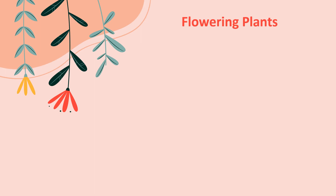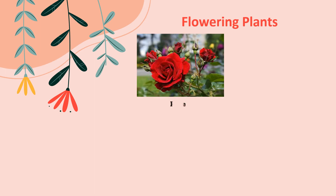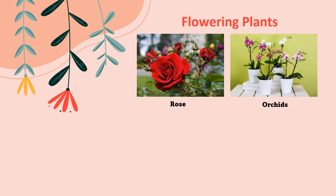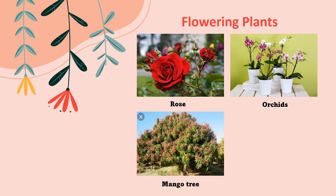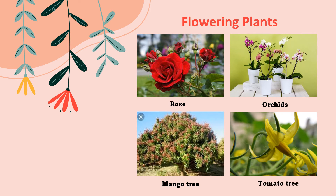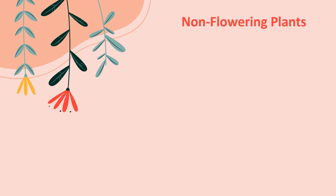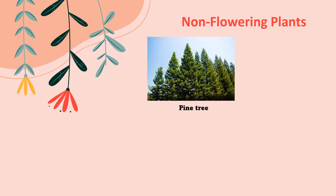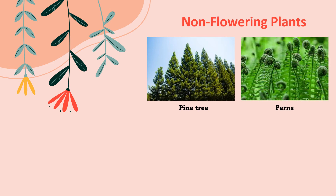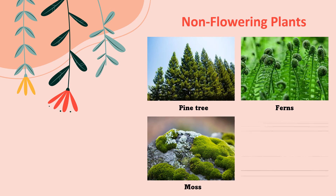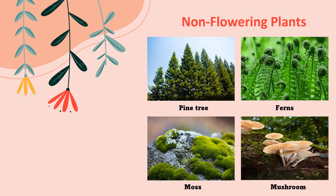Now let us look at some examples of flowering plants: rose, orchids, mango tree, and tomato. All of these plants are flowering plants. Examples of non-flowering plants include: pine tree, ferns, moss, and mushroom.